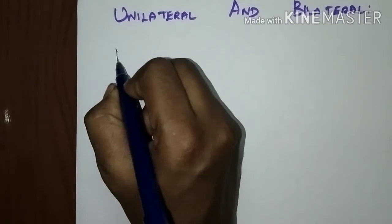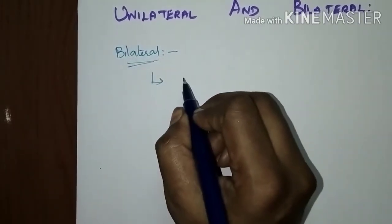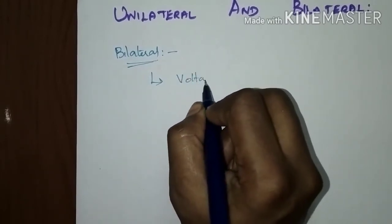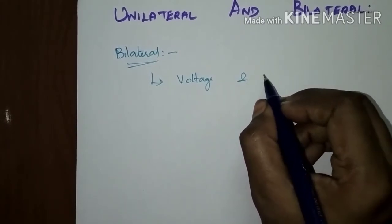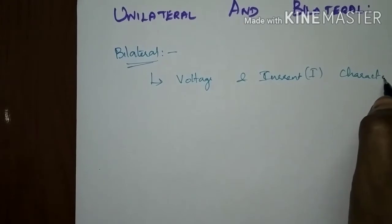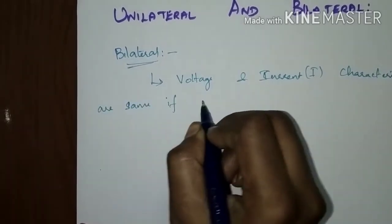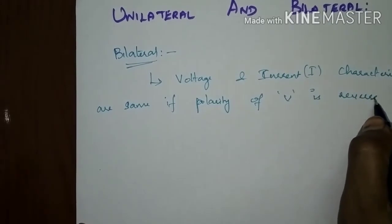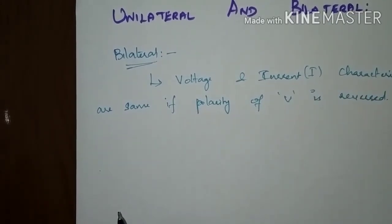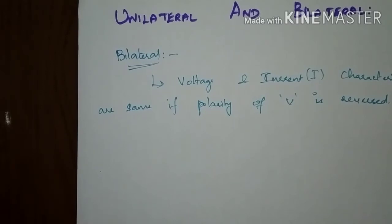Bilateral elements are the elements in which the VI characteristics — that is, the voltage and current graph — are the same if the voltage and current directions are changed. The voltage and current characteristics are the same if the polarity of the voltage is reversed. The current flowing in either direction will be the same if you change the voltage polarity.